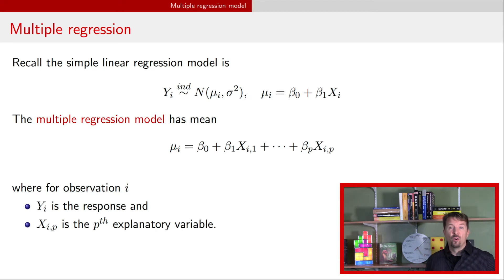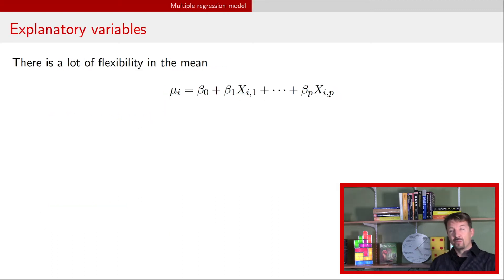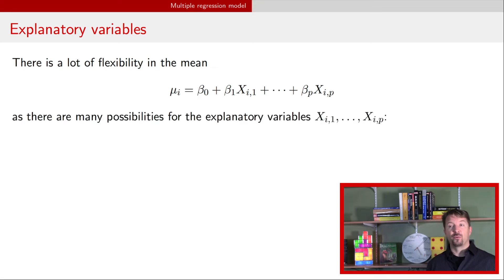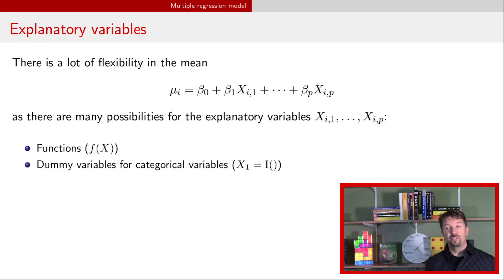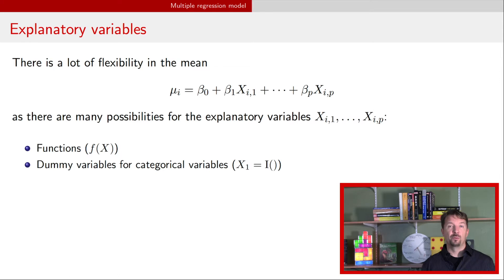We're going to talk about what are the different choices we can have for these explanatory variables x-i. We have lots of flexibility within this model structure. In a previous video we've seen the use of functions of the explanatory variables — in particular logarithms and taking logs of explanatory variables. But we'll see in this slide another possible function that we could use. Also in a previous video we talked about using categorical variables, that is introducing dummy variables that indicate the different levels of that categorical variable.